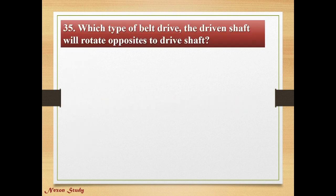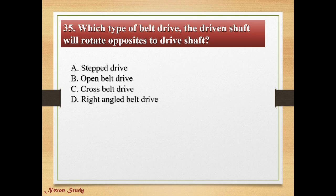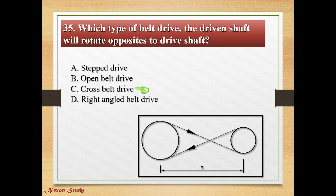Question: Which type of belt drive causes the driven shaft to rotate opposite to the drive shaft? Options: step drive, open belt drive, cross belt drive, right angle belt drive. Right answer is cross belt drive. This is a cross belt drive.